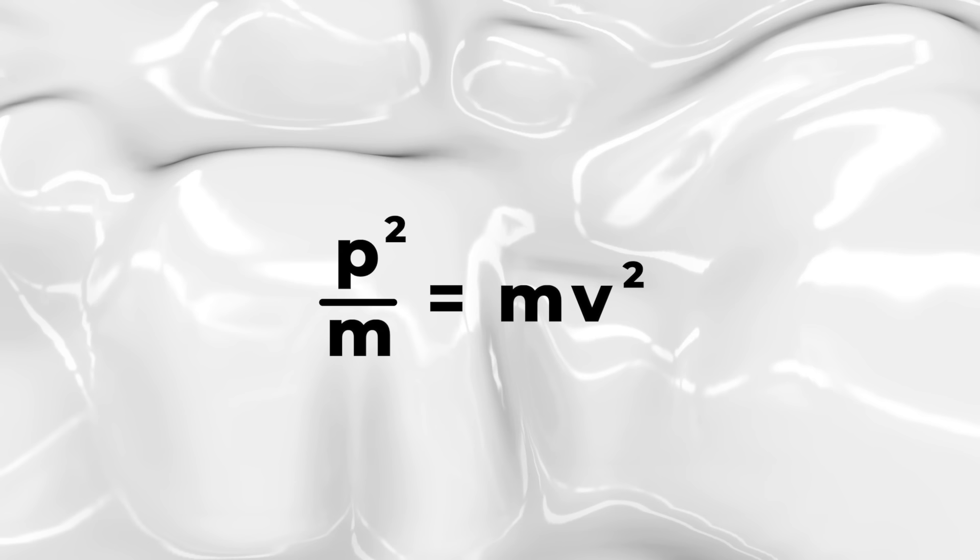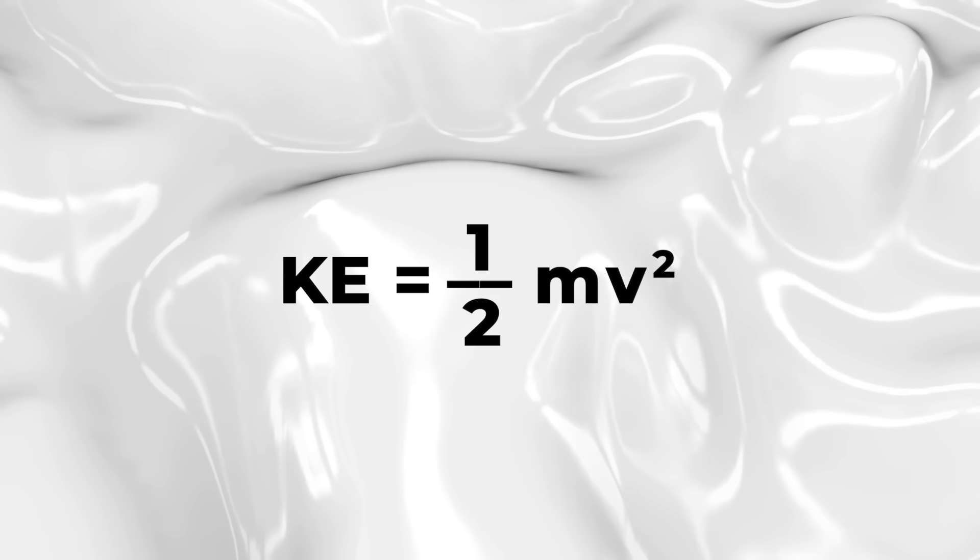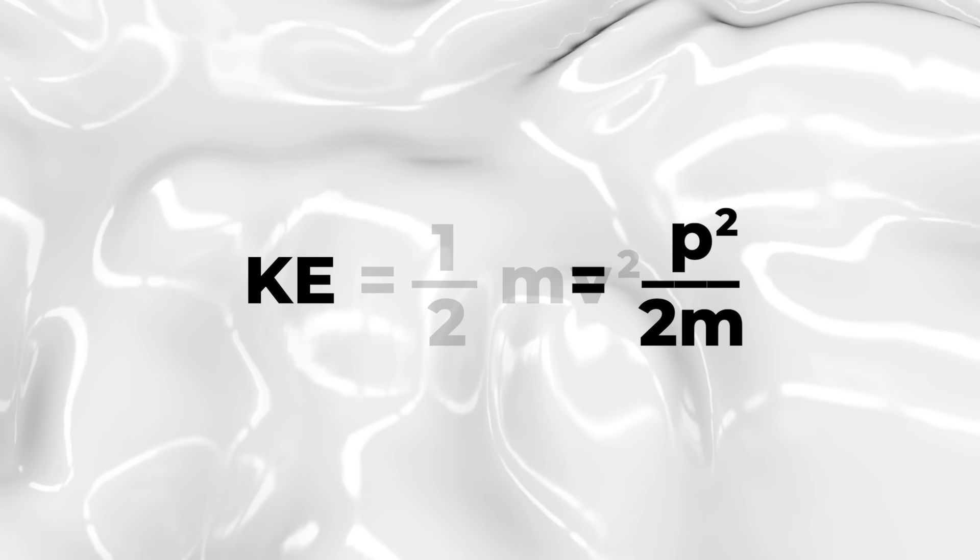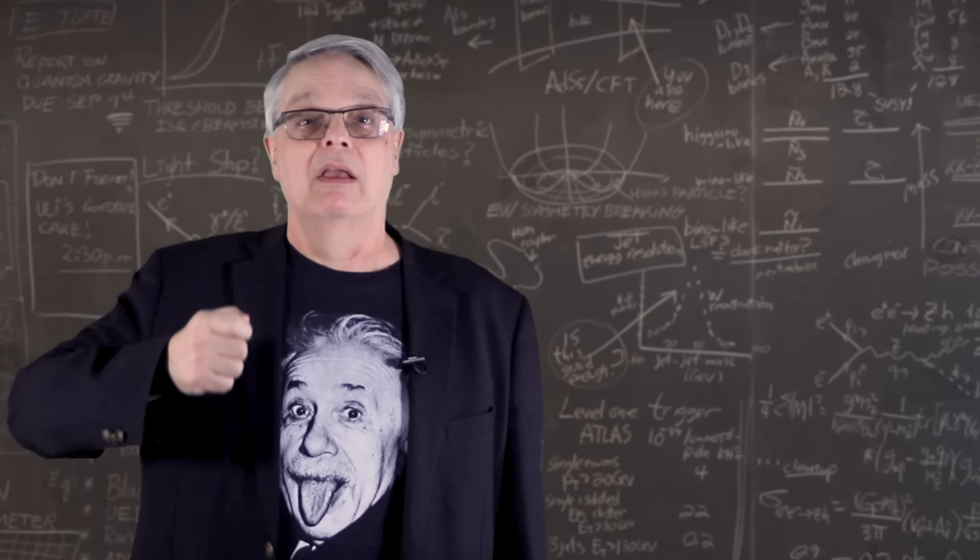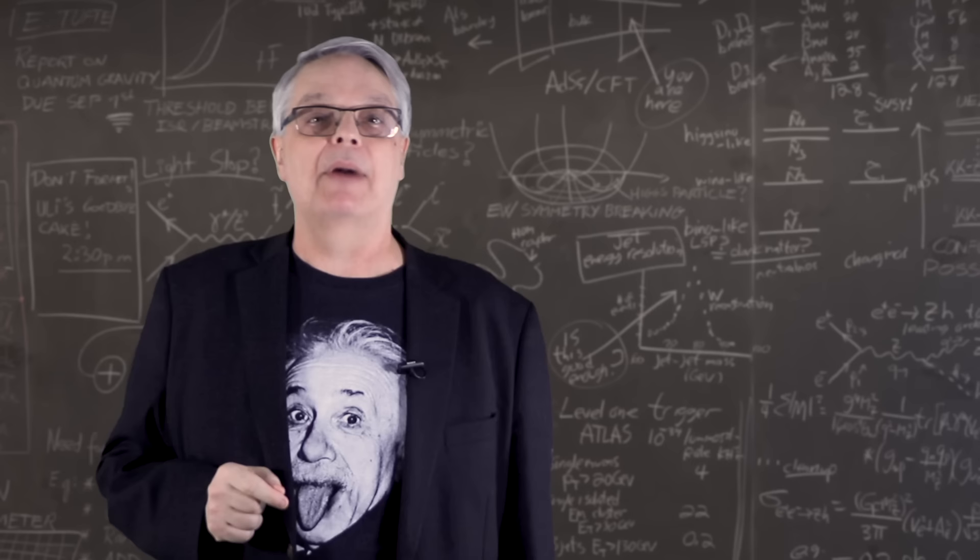On the right-hand side, the bottom m cancels one of the top m's, and you get p squared divided by m equals mv squared. Which should remind you of something, specifically the kinetic energy equation. You can replace the mv squared in the kinetic energy equation with this p squared over m thing, and what you find is that the kinetic energy equals the momentum squared divided by twice the mass. KE equals p squared divided by 2m.